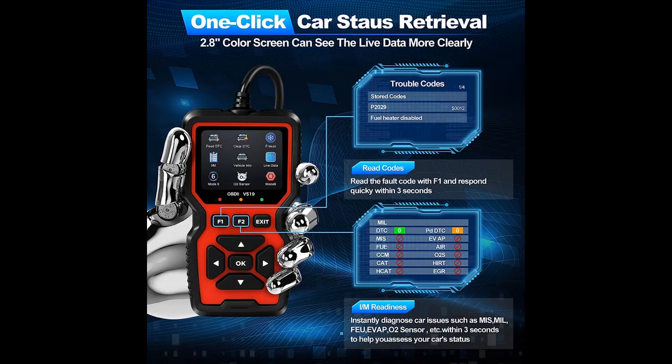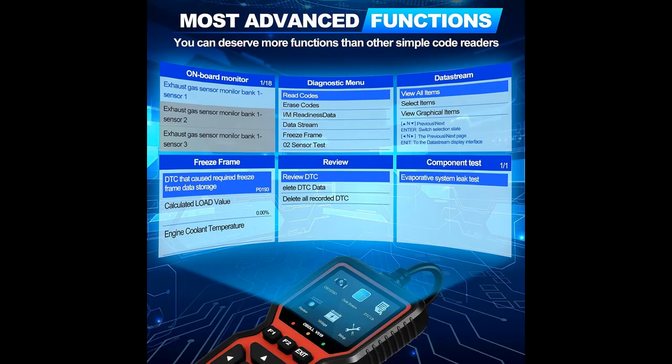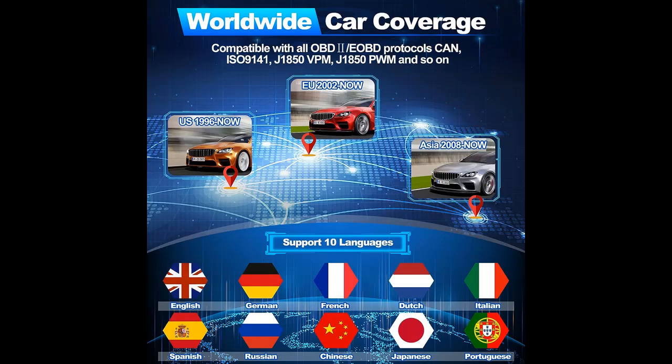Convenient Data Printing and Lifetime Free Upgrades: The OBD2 Scanner Diagnostic Tool offers advanced features such as Data Stream Review and DTC Replay, along with a convenient printing function. Connect the OBD2 Scanner to your computer — compatible with Windows systems only — to easily print fault data. We offer lifetime free upgrades for the device, ensuring you always have access to the latest features and improvements.